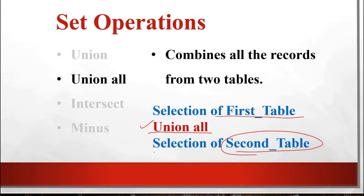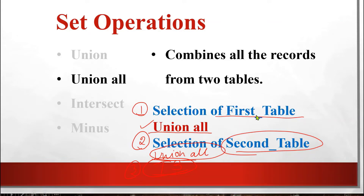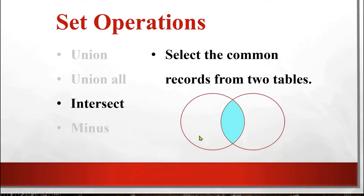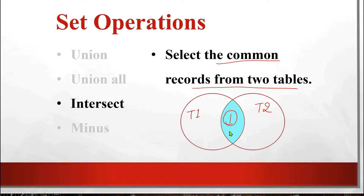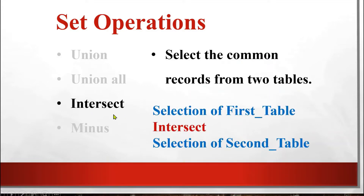If you want to perform the operation with more than two tables, you just write UNION ALL again followed by the third table. You can apply these operations over any number of selections, but at a time it works with two selections — like a binary operation with two operands. Next is INTERSECT — it selects only the common records from two tables, and those common records appear only one time, not two times.